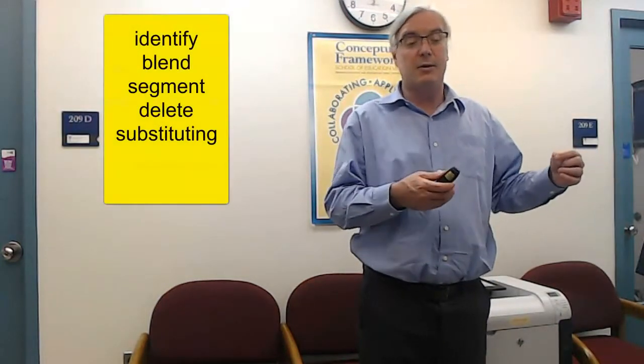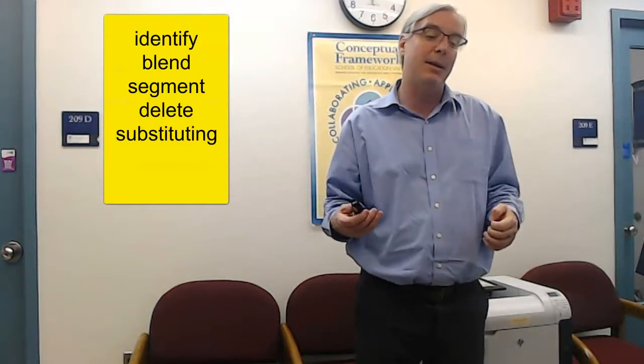That's rhyming words, but it really comes down to identifying, blending, segmenting, deleting, and substituting phonemes. In the name game, you're substituting the first phoneme in a word. Take the word 'cat' — how many letters? Three. How many syllables? One. How many phonemes? C-A-T, three. That's the difference between a syllable and a phoneme.